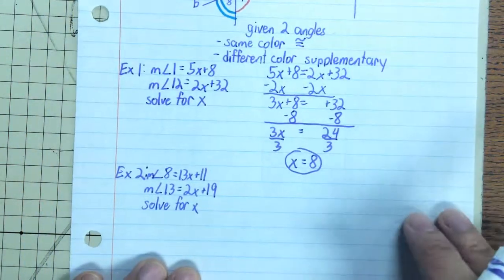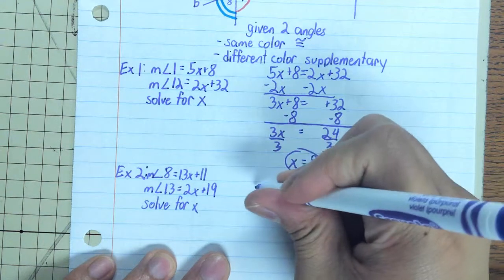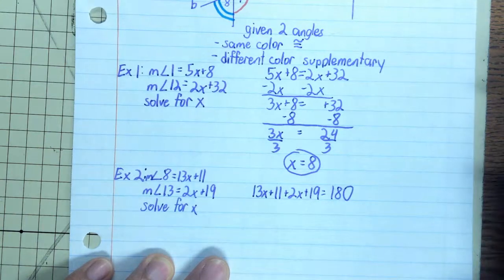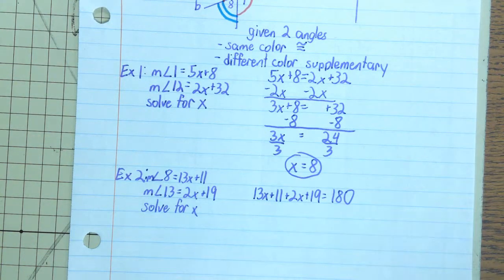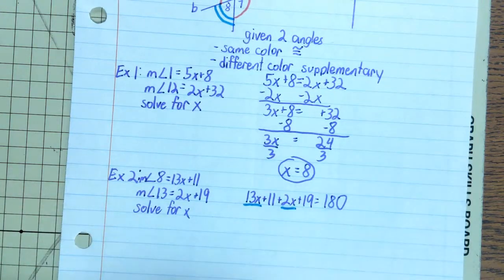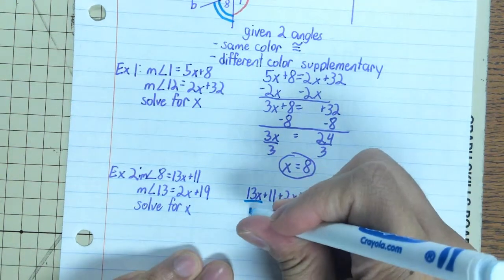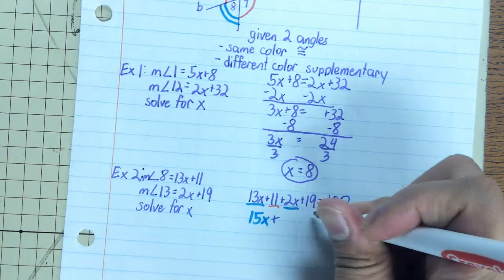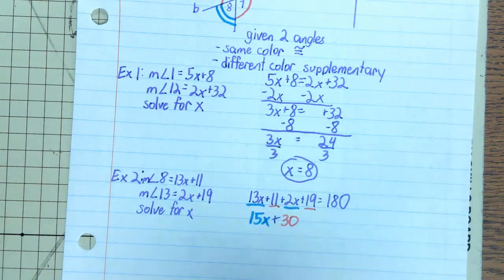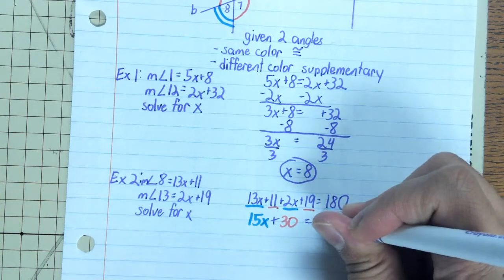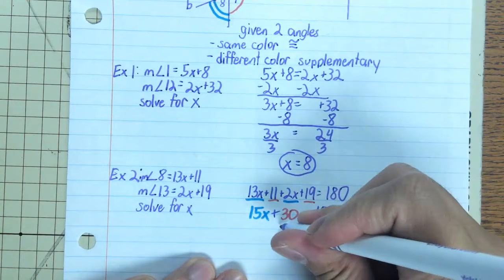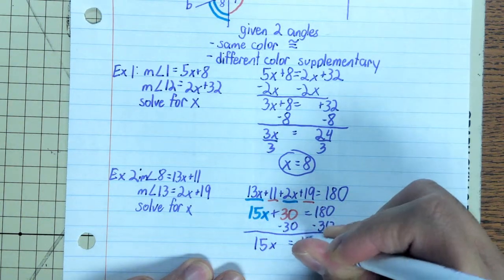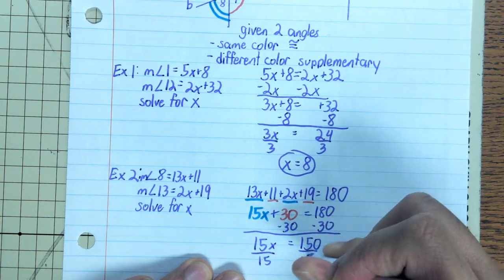And supplementary means I can add the two together and they should equal 180. So my equation would be 13x plus 11 plus 2x plus 19 equals 180. Solving for this algebraically, I want to get rid of my 30, so subtract 30 on both sides. Get 15x equals 150, and dividing by 15 gets me x equals 10.